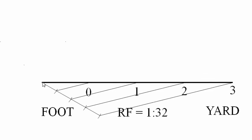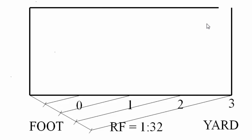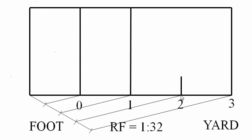Next, give the diagonal scale some height. I've taken the height as five centimeters — you can choose six or seven, but don't go beyond seven centimeters to avoid wasting space. Draw the height, join the corners, and mark the intersecting points.